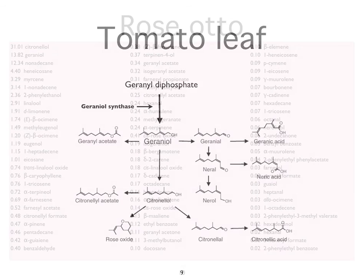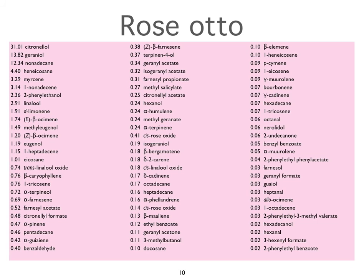Just to show you the complexity of rose from an actual analysis of a specific rose otto: most of the constituents are at less than 1%, going down to 0.02%. The numbers are percentages, listed in order of percentage. The greatest percentage in this particular rose otto is citronellol. That may not be typical — there may be constituents in there that don't occur in some other rose ottos. But you'll see many familiar names like eugenol, linalool, and methyl salicylate.